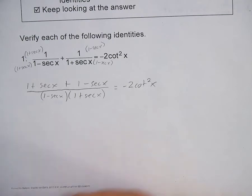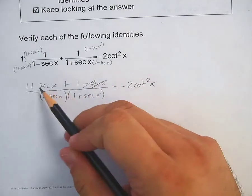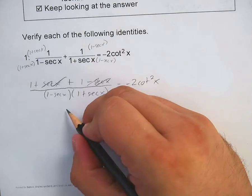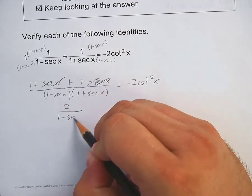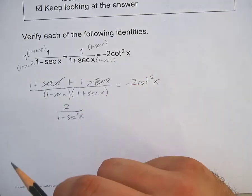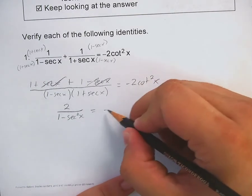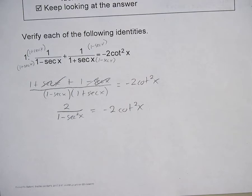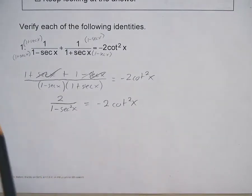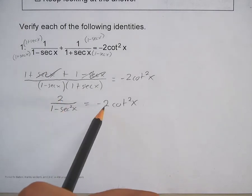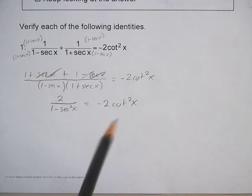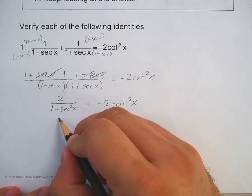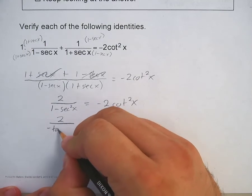From here, simplify down. The numerator becomes: 1 times (1 + secant x) is 1 + secant x, plus 1 times (1 − secant x) is 1 − secant x. The secant x and negative secant x cancel — bye-bye. 1 plus 1 is 2. The denominator is (1 − secant x)(1 + secant x), which is 1 minus secant squared x — that's the difference of two squares. I know from my identities that 1 minus secant squared x equals negative tangent squared x.